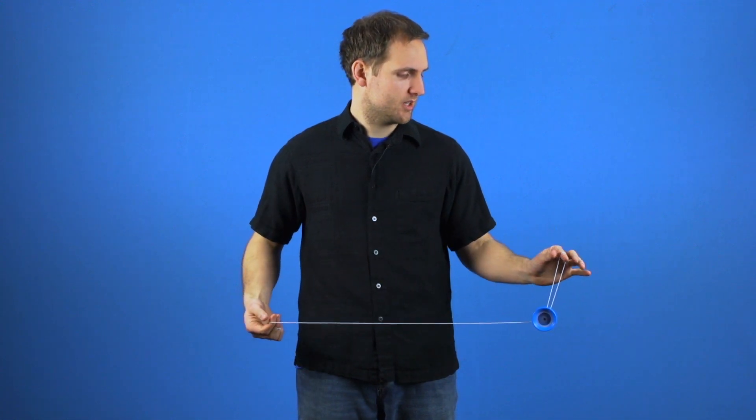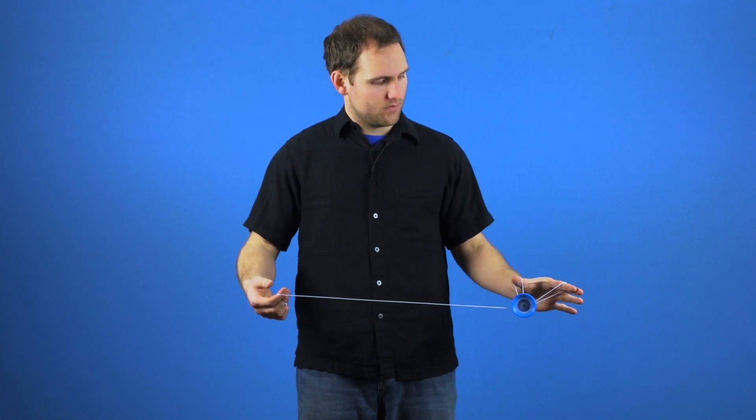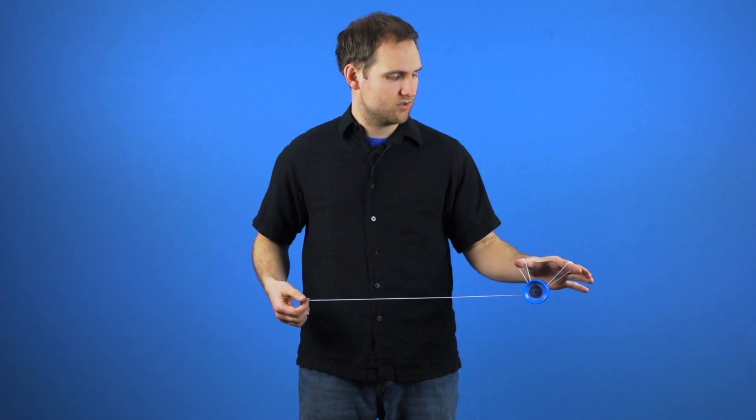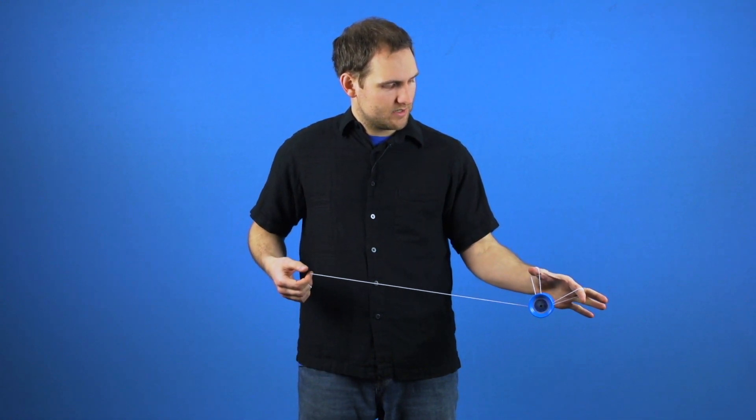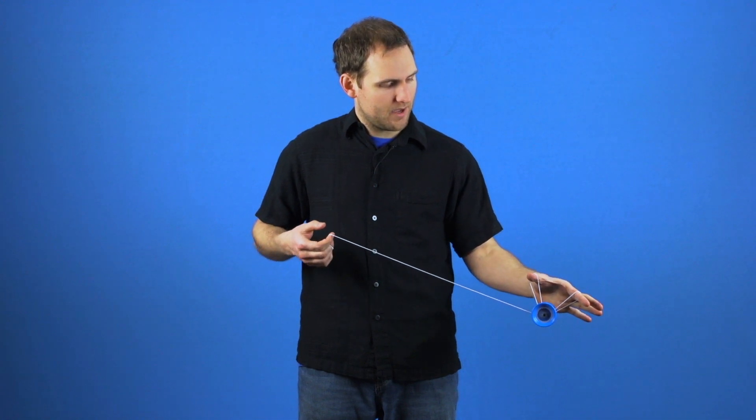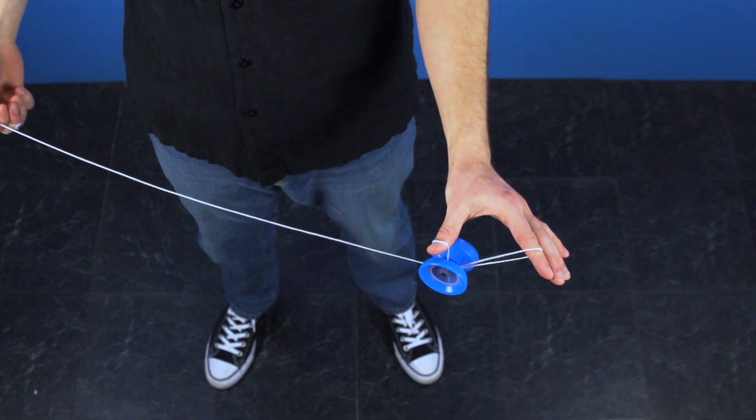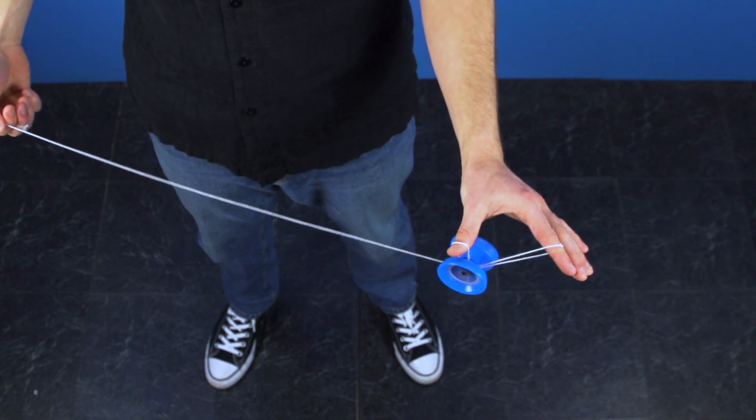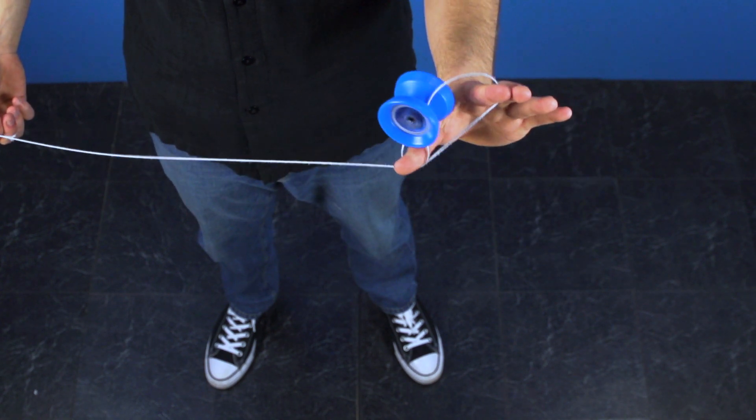Now the next part of this trick: you have got the yoyo either here or the string can be behind. You are going to take your opposite hand keeping that C shape and tilt your thumb back and push down into the string. You will see that will pop the yoyo back out through the fingers right back into a trapeze, and that will set us up for the next part of the trick.